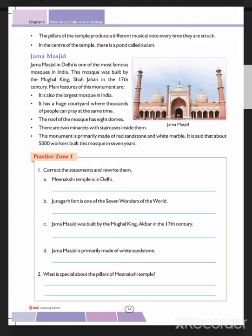Next is Jama Masjid. Jama Masjid in Delhi is one of the most famous mosques in India. This mosque was built by Mughal King Shah Jahan in the 17th century. It is also the largest mosque in India. It has a huge courtyard where thousands of people can pray at the same time. The roof has eight domes. There are two minarets with staircases inside them. This monument is primarily made of red stone and white marble. About 5,000 workers built this mosque in seven years.